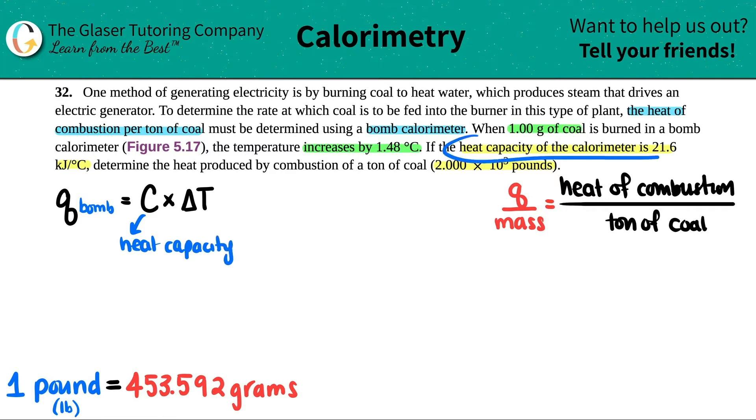Now they told us that the heat capacity of the calorimeter was 21.6 kilojoules per degree Celsius. They said that the temperature increased by 1.48 degrees Celsius. They didn't tell me a starting temp or ending temp, but they did tell me the change. And if you went up in temperature, your delta T will be a positive value. So this would just be 1.48. Now we have both of them. So let's figure out what that heat is going to be.